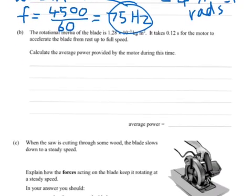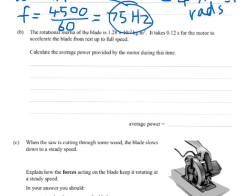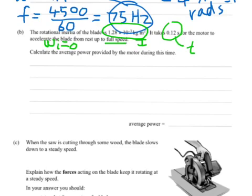Moving on to B. The rotational inertia of the blade is 1.28 times 10 to the negative 3 kilogram meters squared. It takes 0.12 seconds for the motor to accelerate the blade from rest up to full speed. So there's our time, there's our rotational inertia, and accelerating from rest up to full speed. From rest means the initial angular velocity equals 0 radians per second.